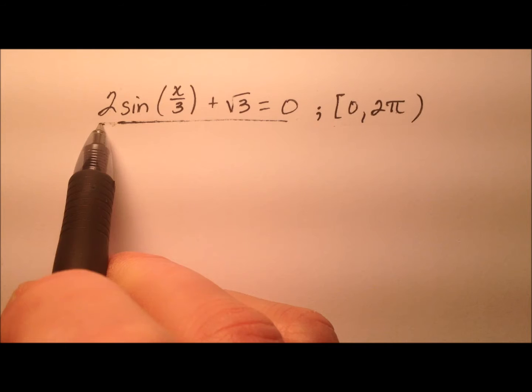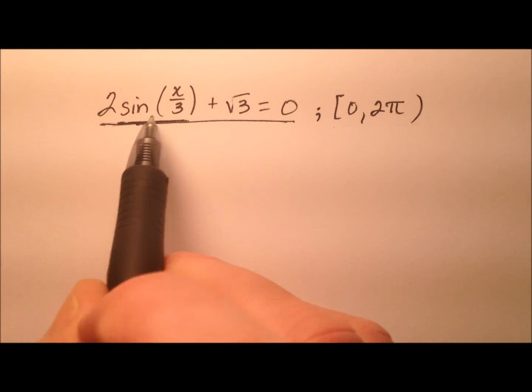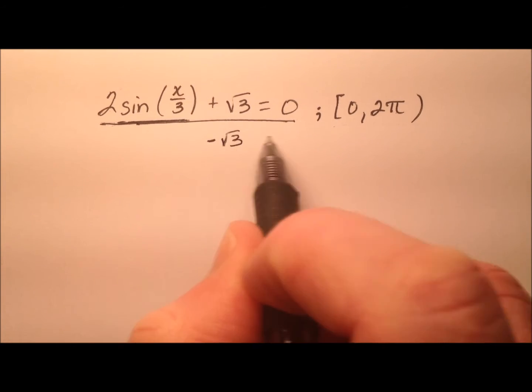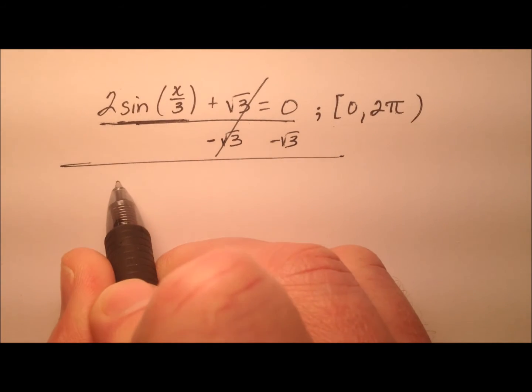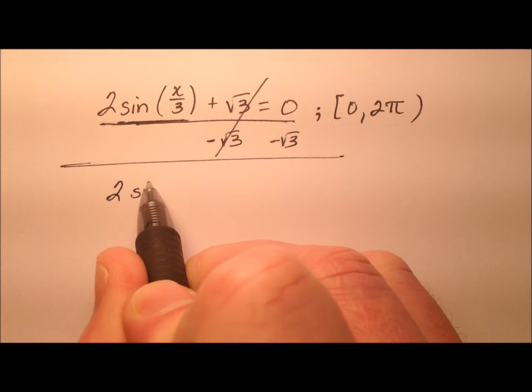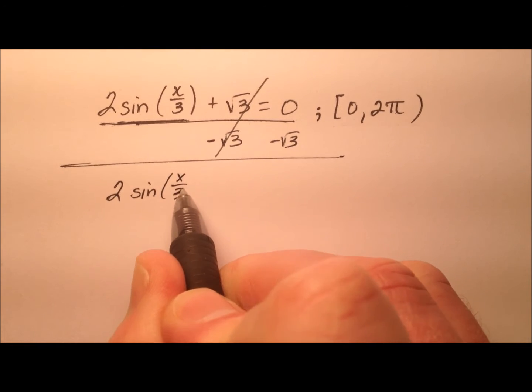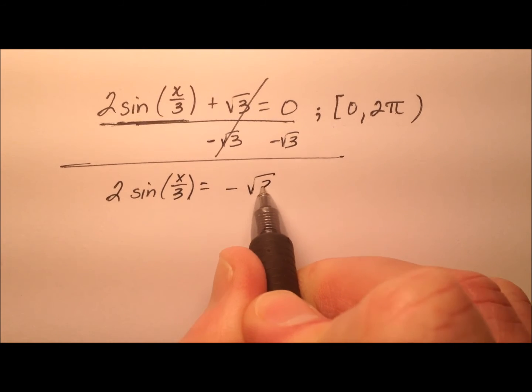Looking specifically at this example, we just have sine in one place here. So let's start by subtracting the square root of 3 from both sides. So I'll have twice the sine of that x over 3 equals negative square root of 3.